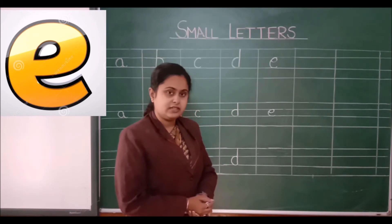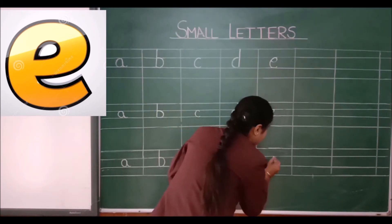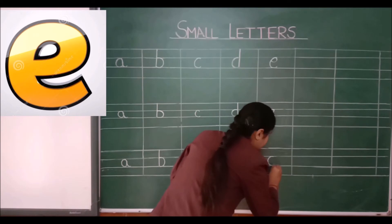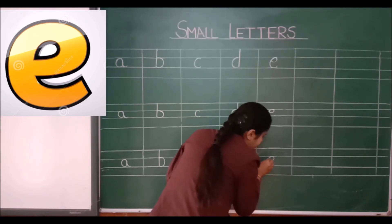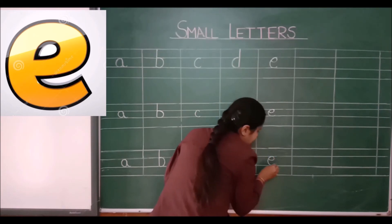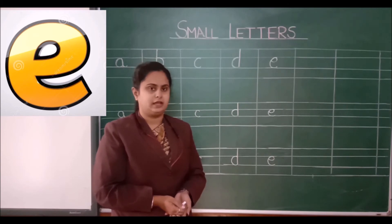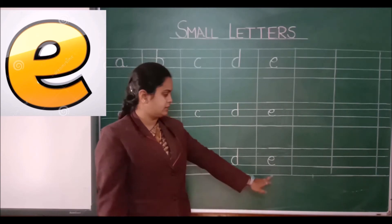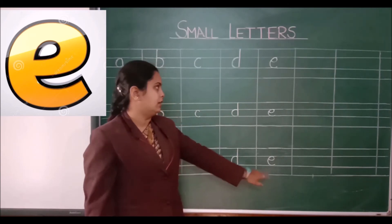Once again children, see here — first you have to make a curve like this, then you have to take a round like this. This is small E.